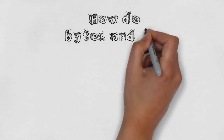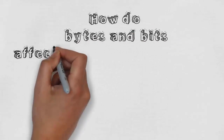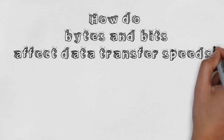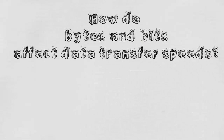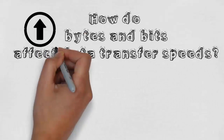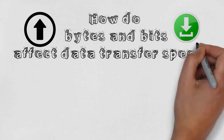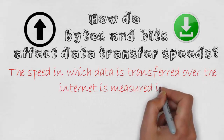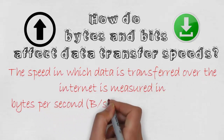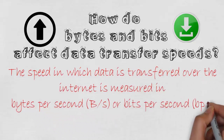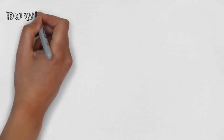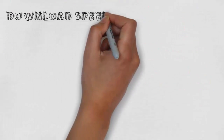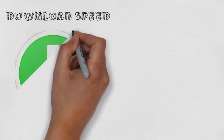How do bytes and bits affect data transfer speeds? The speed at which data is transferred over the internet is measured in bytes per second or bits per second. Many companies choose to display their speed in bits per second as the number appears larger.